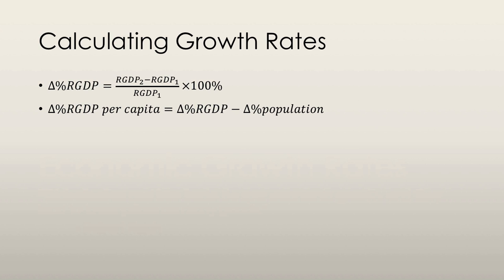To calculate the real GDP growth rate, we take the real GDP of the current year, subtract the real GDP of the previous year, divide that by the real GDP of the previous year, and multiply by 100. A change in percent of real GDP indicates how quickly the total economy is expanding, but it doesn't indicate a change in the standard of living. For that reason, we use real GDP per capita — real GDP divided by the population — which gives us the average amount of goods and services an average person can purchase. The growth rate of real GDP per capita can be calculated by subtracting the population growth rate from the real GDP growth rate.